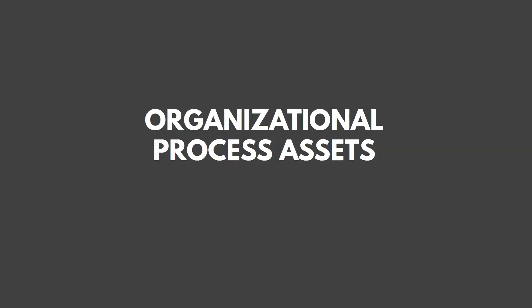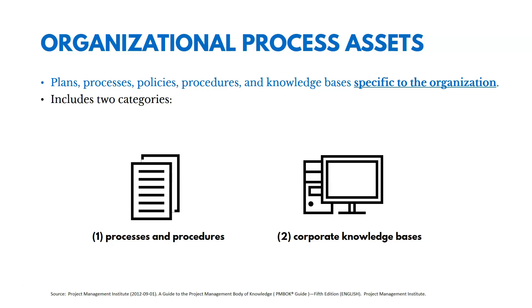Let's talk about organizational process assets — what those are. Organizational process assets are plans, processes, policies, procedures, and knowledge bases specific to the organization. There are really two categories: processes and procedures, and corporate knowledge bases. Processes that the organization has could certainly impact what we do on our project.